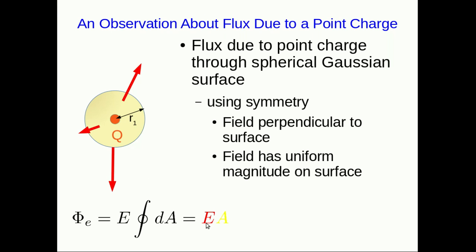So I've put the E in red and the A in yellow so that as I substitute in, you can see here's the field due to the point charge. Here's the area of the sphere. And look, the r1 squareds cancel and the 4π's cancel. And so we're left with nothing more than q over epsilon naught. And notice that is the q, the charge, inside our Gaussian surface.